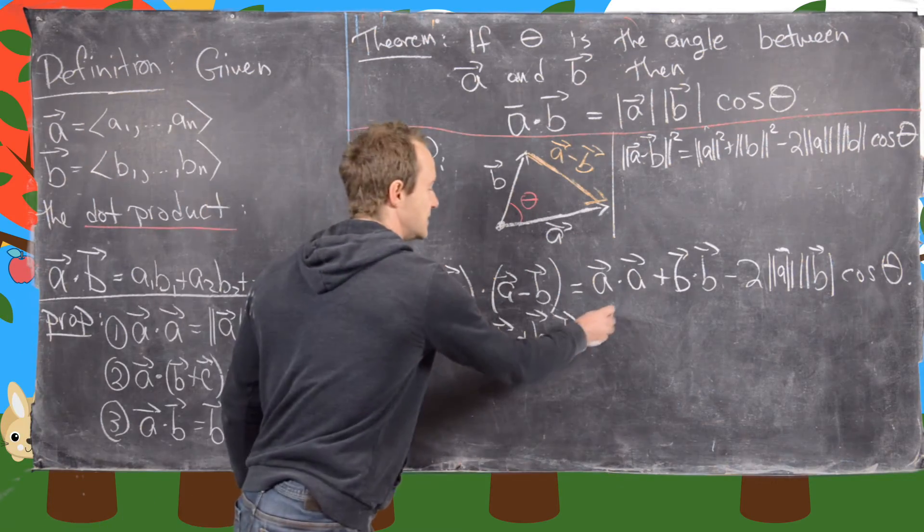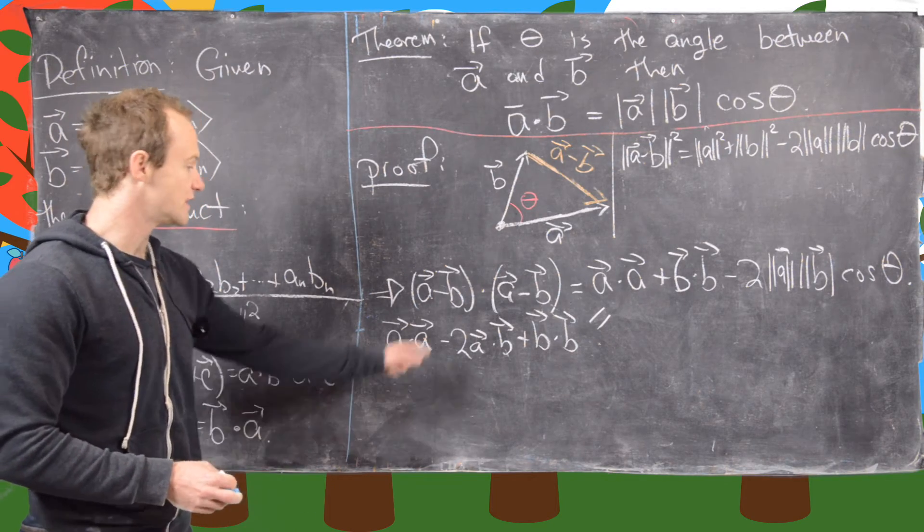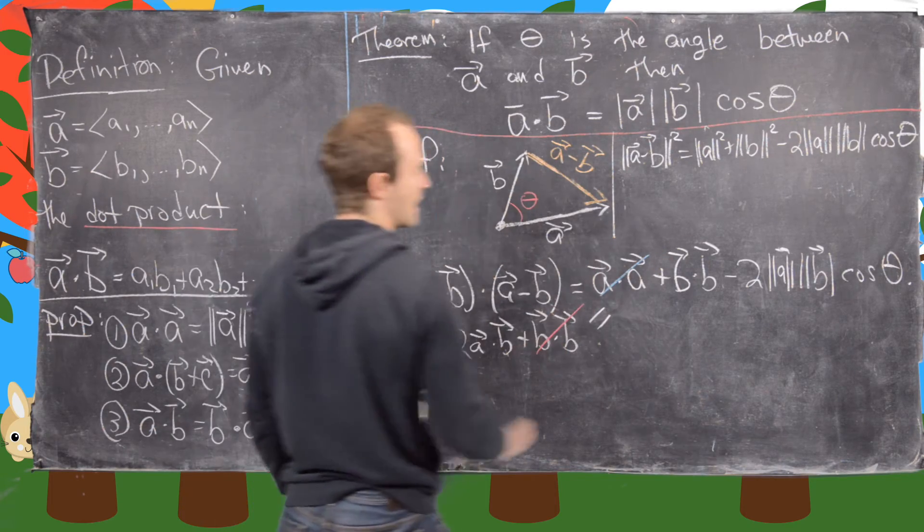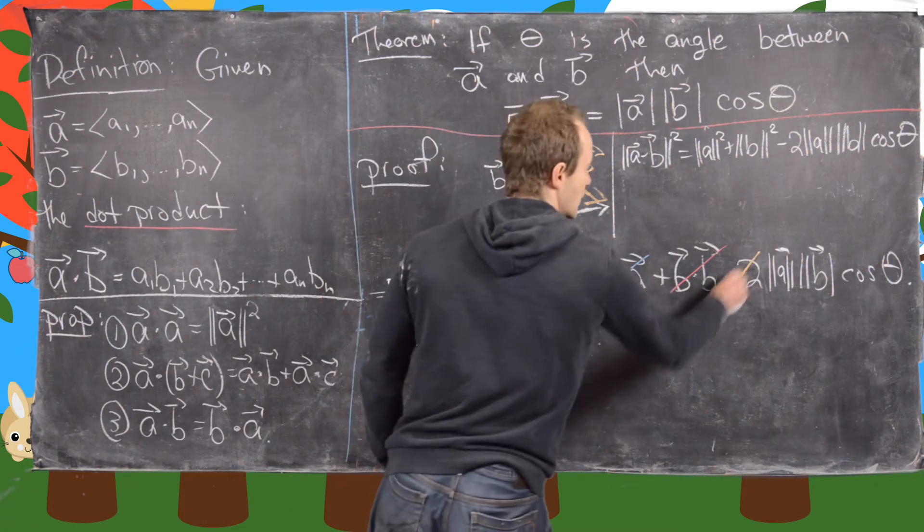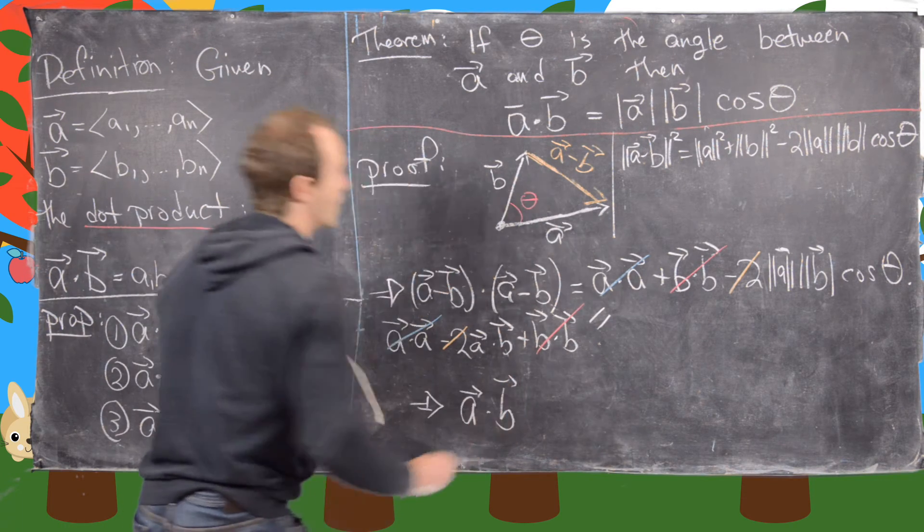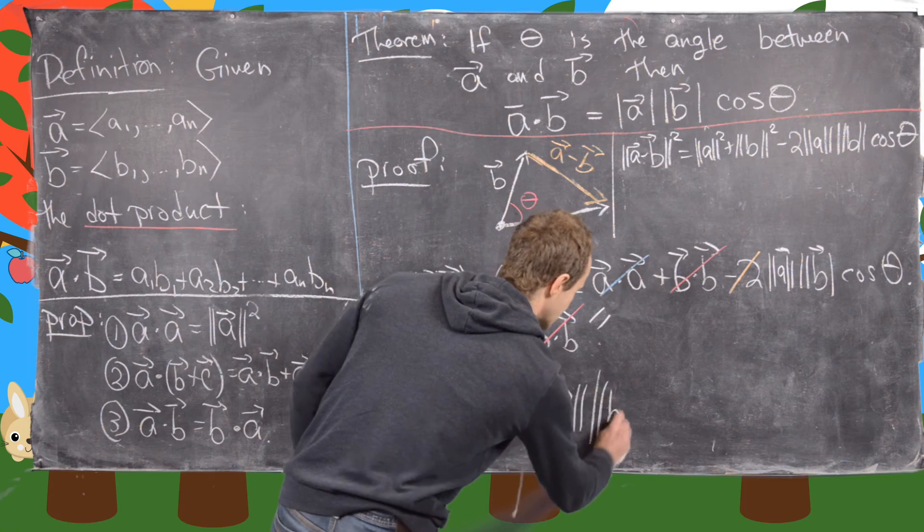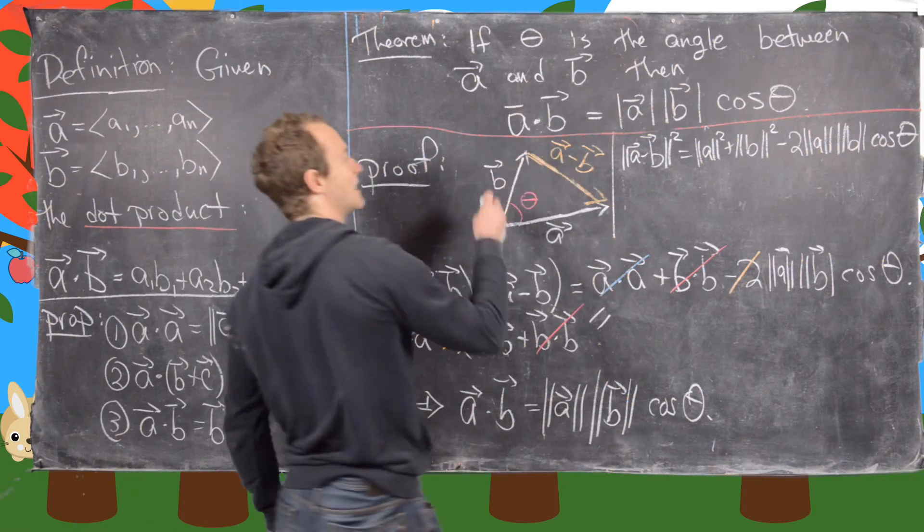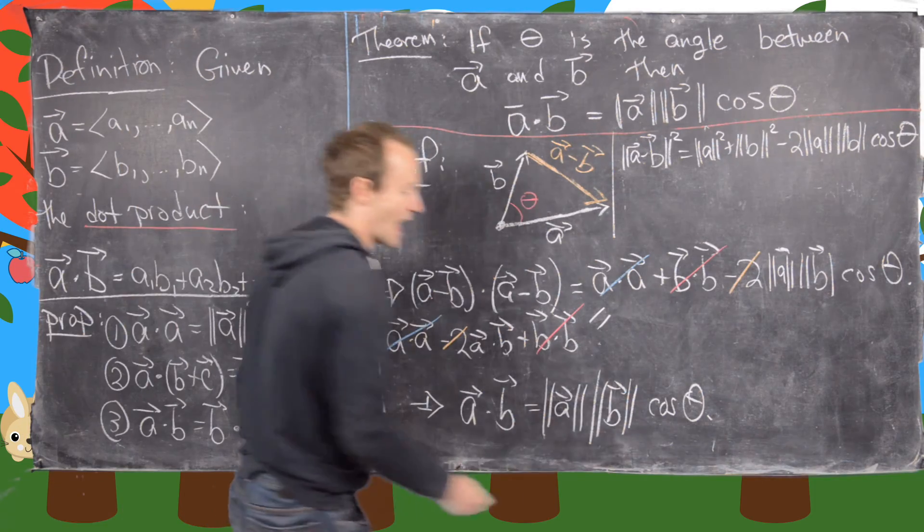But now notice, that's going to be equal to this right-hand side. And now we can cancel a bunch of terms. So notice, we can cancel this A dot A with this A dot A. We can cancel this B dot B with this B dot B. And then we can finally cancel this minus 2 with this minus 2. And that leaves us with A dot B on the left-hand side, and that leaves us with the length of A times the length of B times cosines theta on the right-hand side, which is exactly what we want. And I forgot to use this double notation up here. So that ends this proof.